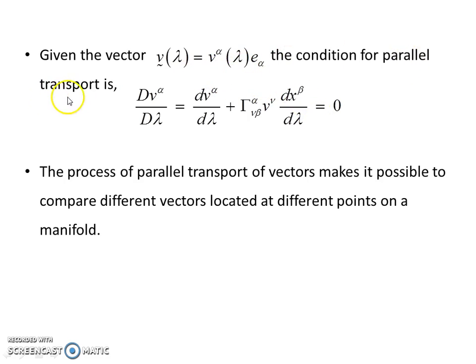So given this vector, the condition for parallel transport is that the components, or the covariant derivative of the vector, are set equal to zero. So the process of parallel transport of vectors makes it possible to compare vectors located at different points on a manifold.